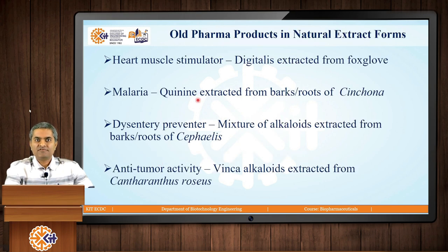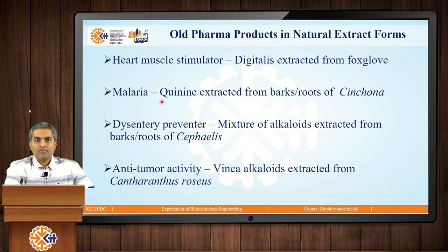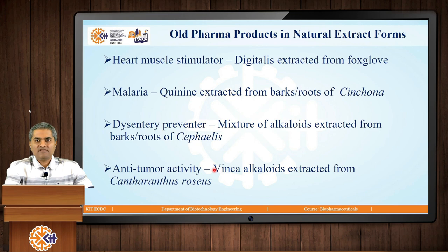When we consider the history of the pharmaceutical industry, in the old era, pharma products used to be extracted from natural sources like plants. These are few examples: the heart muscle stimulator called digitalis was extracted from the plant foxglove; the quinine compound, which was a medication for malaria, was extracted from the bark or roots of the cinchona plant; a mixture of alkaloids effective as a dysentery preventer was extracted from barks or roots; and vinca alkaloids, which have anti-tumor, that is anti-cancer, activity were extracted from the plant Catharanthus roseus.